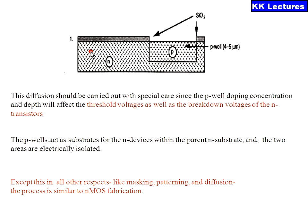I will be taking an N-type substrate into which I will be forming a P-Well, where I will be forming an N-device — that is, an N-MOS transistor — and I will be forming a P-MOS transistor on the other side. As we are having an N P-Well, that is why it is called the P-Well process. This diffusion should be carried out with special care since the P-Well doping concentrations and depth will affect the threshold voltages as well as breakdown voltages of the N-transistor.